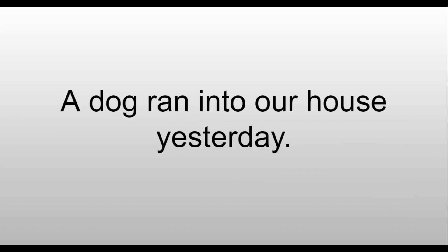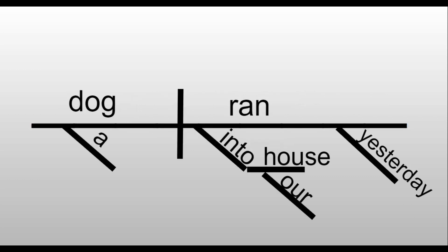A dog ran into our house yesterday. Dog is your subject, ran is your verb. A is your adjective describing the dog. Into our house is our prepositional phrase. Then yesterday is describing when, so it's diagrammed under the verb. Yesterday is the adverbial noun.